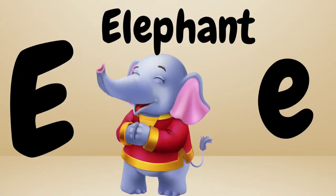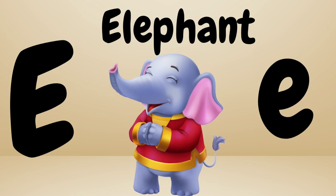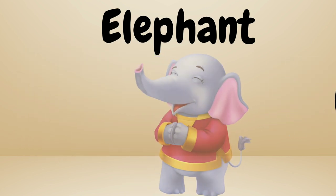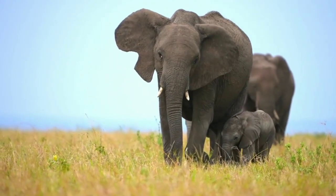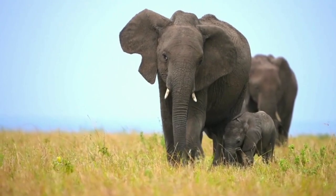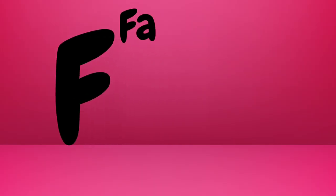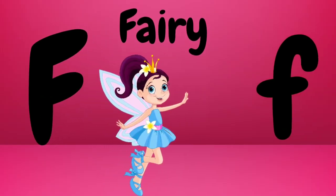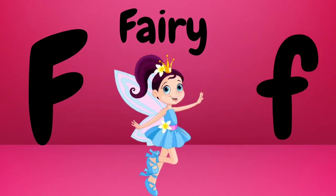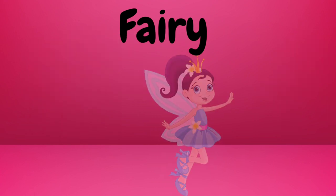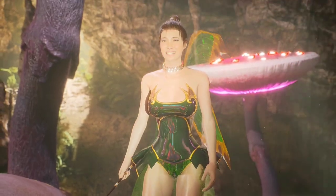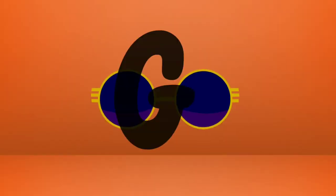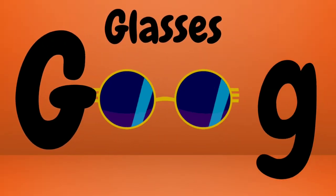E is for elephant. Elephant. Elephant. This is an elephant. Elephant. F is for fairy. Fairy. Fairy. This is a fairy. Fairy.